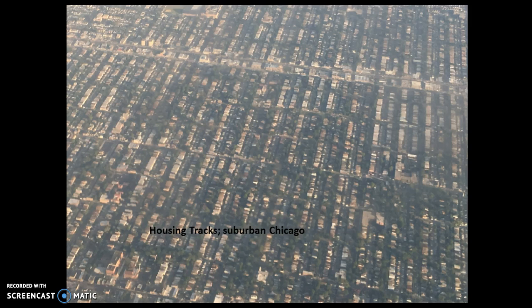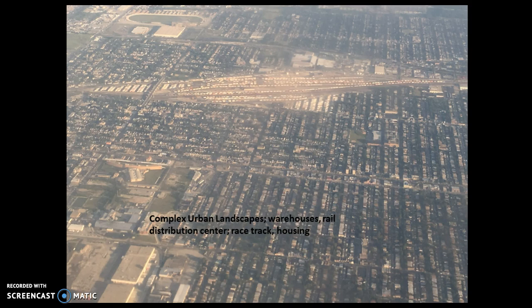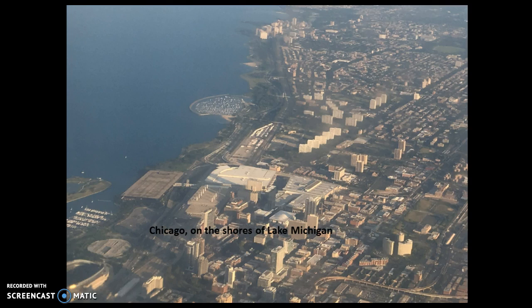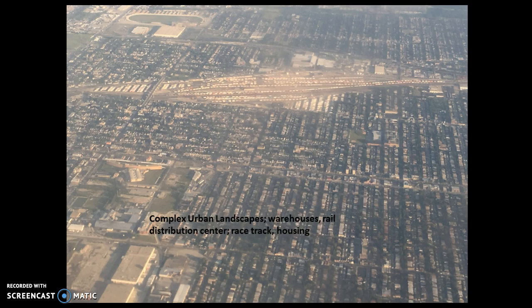Interesting patterns of these housing tracks in the suburbs. Urban landscapes — these complex urban landscapes, epitomized here by so much going on: residential in the lower right-hand corner, these big warehouse operations, a massive rail distribution center, and then a racetrack up at the top.